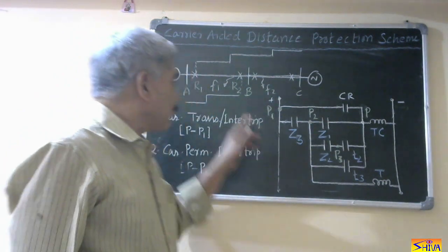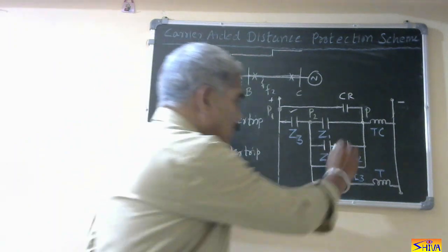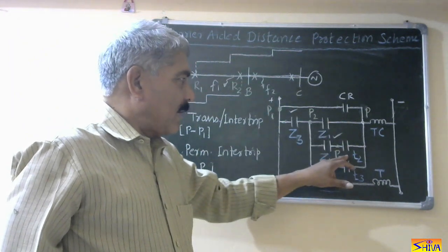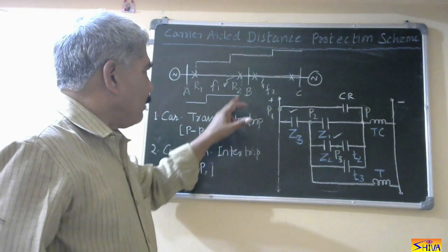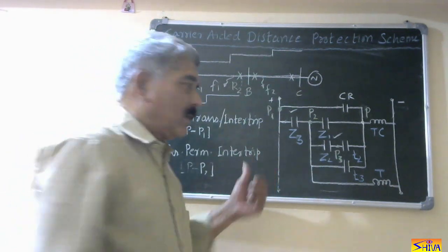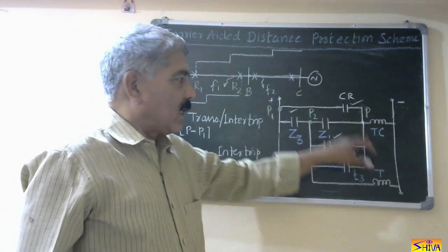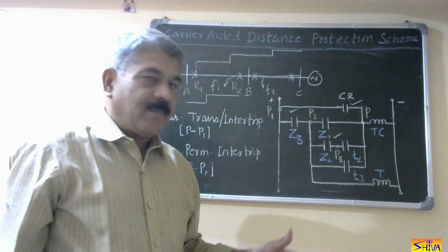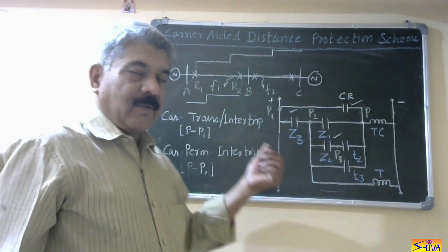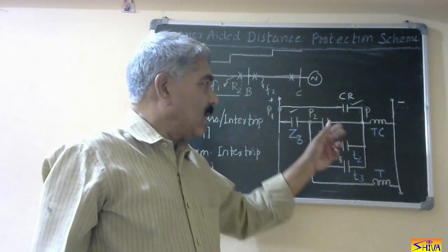Let us see how this scheme works. For fault F1, Z3 will close, Z2 will close, and the timer coil will be energized. If we are not using the CR contact, then after time T2 the trip coil of the circuit breaker would be energized. But carrier signals are transmitted from relay R2 to relay R1. As soon as these signals are received, this contact closes. As soon as this carrier receive contact closes, the trip coil of the circuit breaker is energized immediately — we do not wait for time T2. The circuit breaker will operate immediately as soon as the carrier receive relay contact closes.